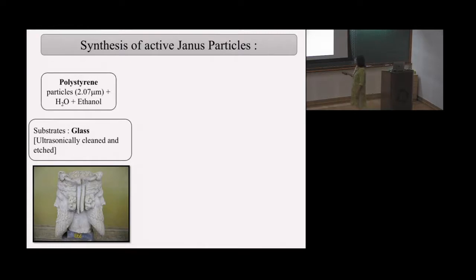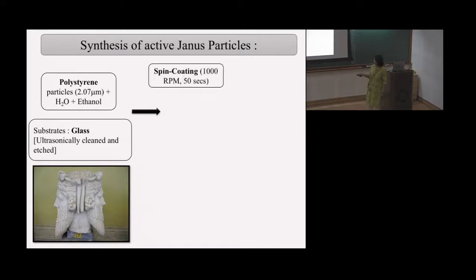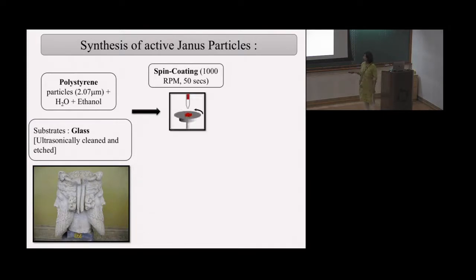We put polystyrene particles of about two microns diameter — a drop on a glass slide — and spin coat it at very high speed: 1000 RPM for 50 seconds to create a monolayer.